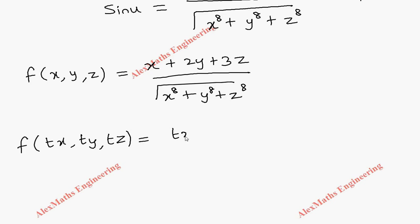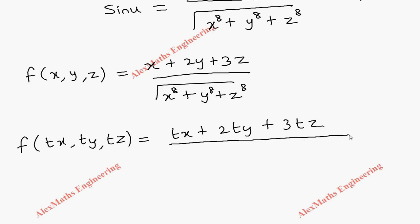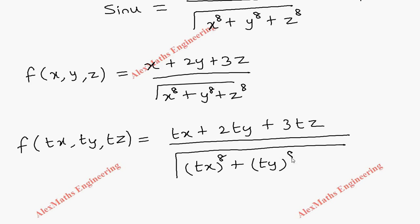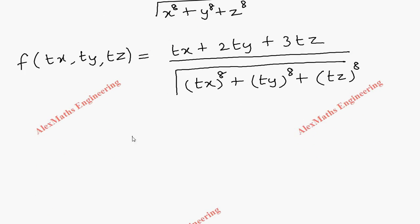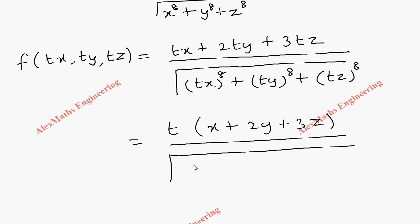Now let's replace x as tx, y as ty, and z as tz. The other side becomes (tx plus 2ty plus 3tz) divided by the square root of (tx power 8 plus ty power 8 plus tz power 8). From the numerator we can factor out t, giving t times (x plus 2y plus 3z).